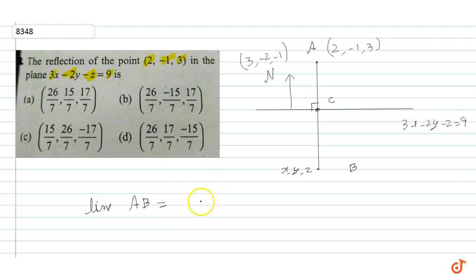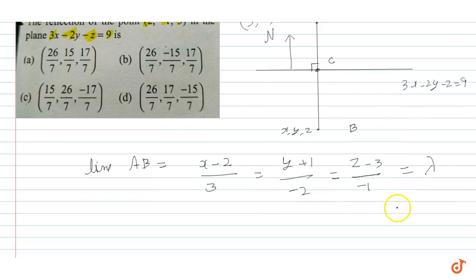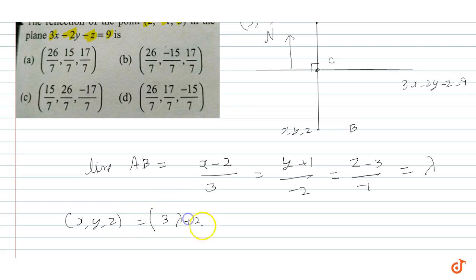The parametric line through point A(2, -1, 3) with direction (3, -2, -1) is: (x - 2)/3 = (y + 1)/(-2) = (z - 3)/(-1) = λ. So the coordinates along the line are x = 3λ + 2, y = -2λ - 1, z = -λ + 3.